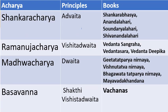Regarding their philosophies: Shankaracharya advocated Advaita school of philosophy; Ramanujacharya advocated Vishishtadvaita; Madhavacharya advocated Dvaita; and Basavanna advocated Shakti Vishishtadvaita. The books written by Shankaracharya, Ramanujacharya, Madhavacharya and Basavanna are given in the right side column — please go through them as they are very important for two-mark questions.